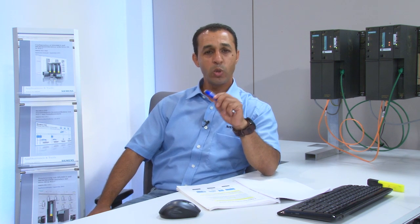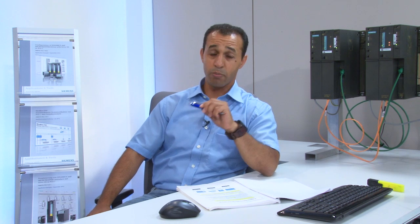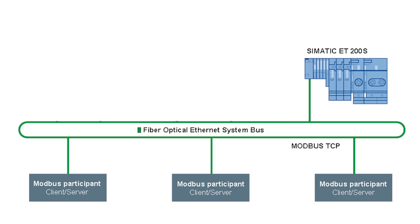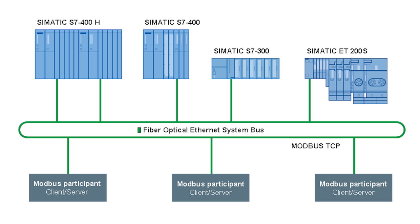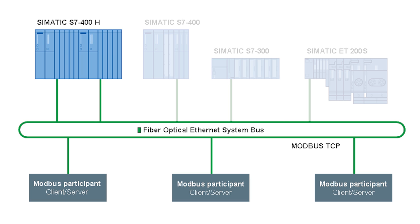Siemens offers different Modbus library variants for Modbus connections, for the SIMATIC S7300, S7400 and S7400H automation systems, for instance. Today we will focus on redundant Modbus TCP communication for SIMATIC S7400H in a client architecture.